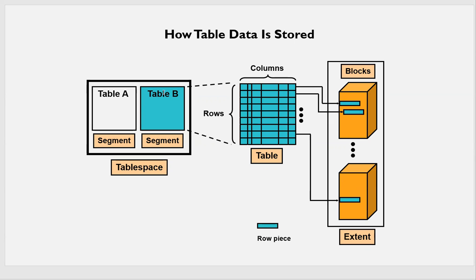For example, table B has three extents — one extent is allocated and another two extents are free, because this entire table B fits in one extent alone and extent two is free. If we add some more data into this particular table, extent two will be written. The group of those extents will make the segment and the group of segments will make the tablespace.